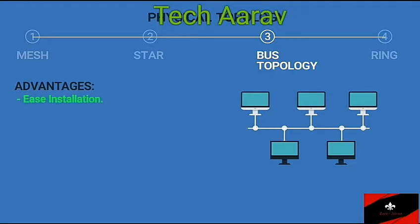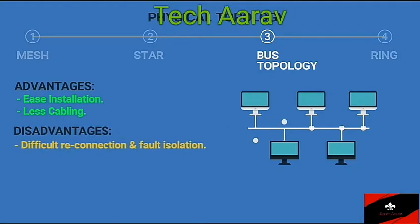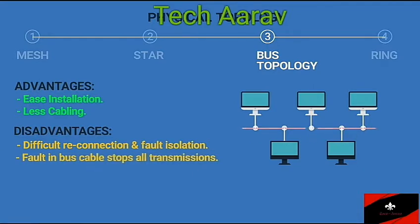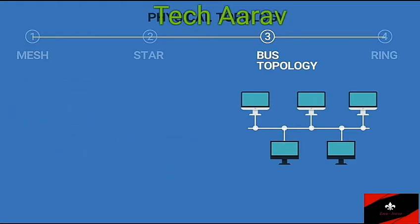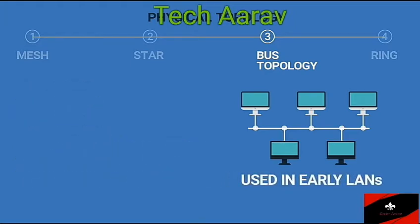Advantages: Ease of installation, less cabling. Disadvantages: Difficult reconnection and fault isolation. A fault or break in the bus cable stops all transmission. A damaged area reflects signals back, creating noise in both directions. Bus topology was one of the first topologies used in the design of early LANs. Ethernet LANs can use a bus topology, but they are less popular now.